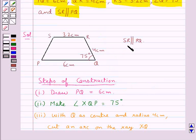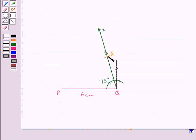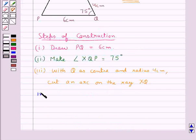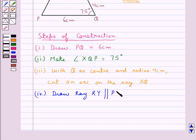Now since it's given that SR is parallel to PQ, so at point R, we will draw SR parallel to PQ. So in the next step, we write, draw a ray RY parallel to PQ.